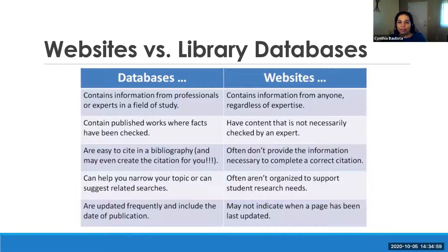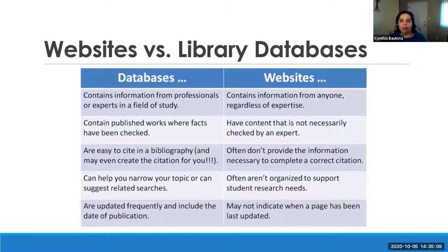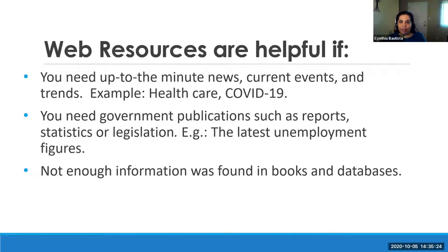These differences make it a little more difficult to know when a website is useful for research. It's important to learn how to evaluate your results so you can find the most relevant and useful information when searching online. But sometimes we do have to go to websites because we don't always find the information we need in databases. For example, when you need up-to-the-minute news — like the latest information about COVID-19 — you might not find that in a database or book because it's too current, so you'd have to go to a website.